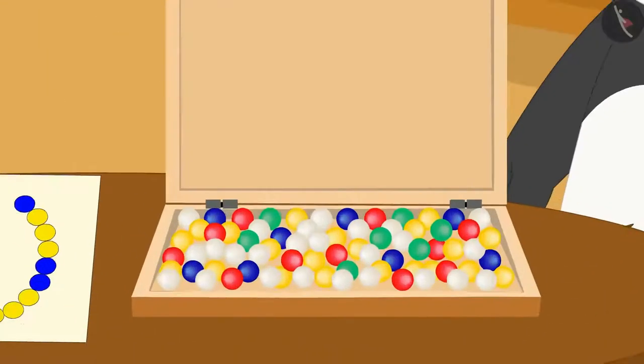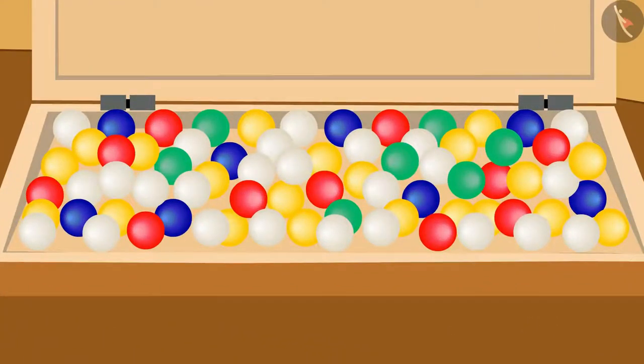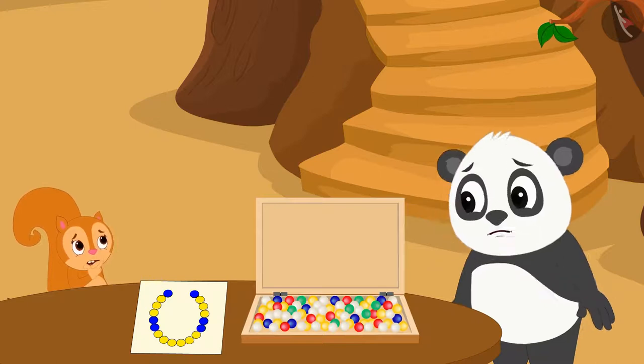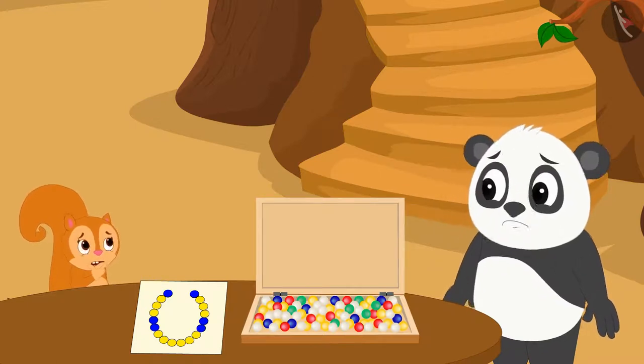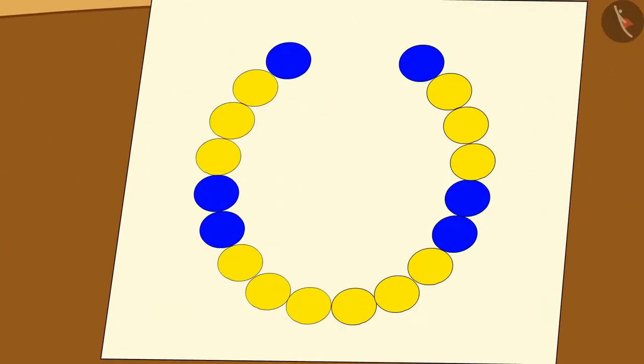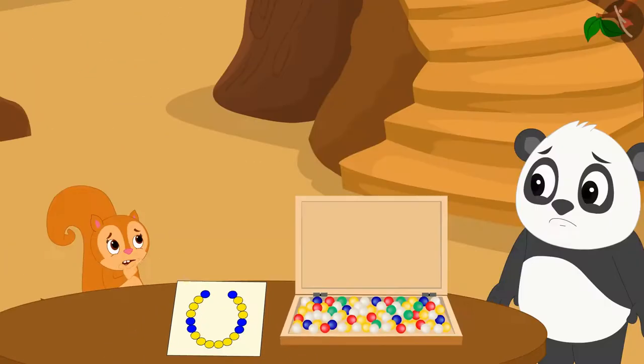But all the beads are scattered. Chanda and Golu are not able to understand whether they have enough blue and yellow beads to make the necklace according to Golu's design or not.